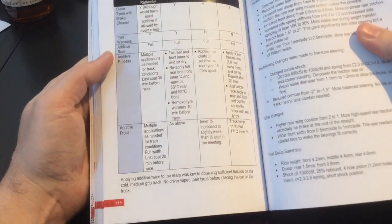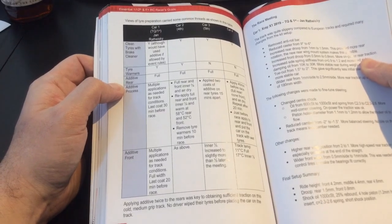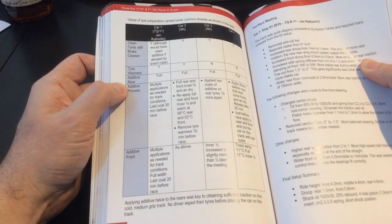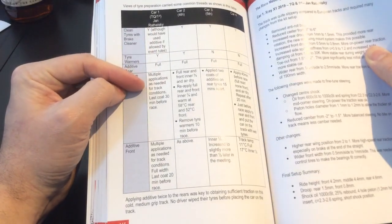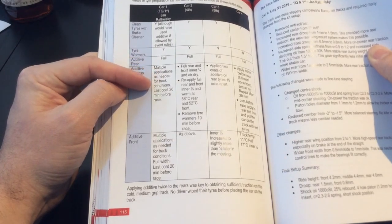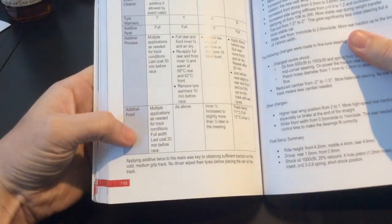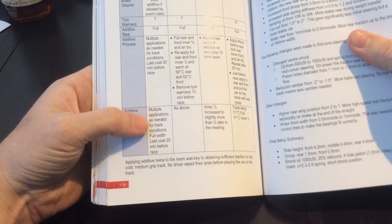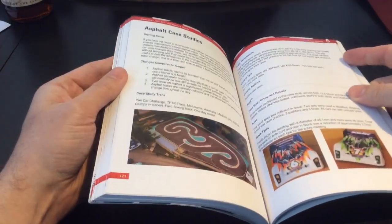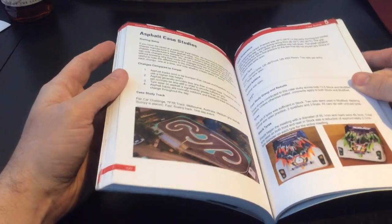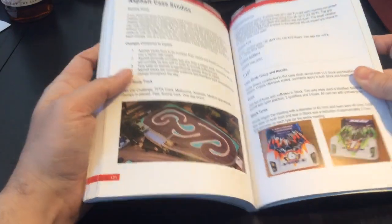You have a tire preparation section. I think this is one that many people have difficulty with, like how to prepare your tires, especially when it comes to additive and such. For example, Jan Rotheiski's car here, I think this is F1, mentions additive process: multiple applications as needed for track conditions, last coat 30 minutes before race. That's for the rear. For the front, multiple applications as needed for track conditions, with last coat 20 minutes before race. There's lots of information here.